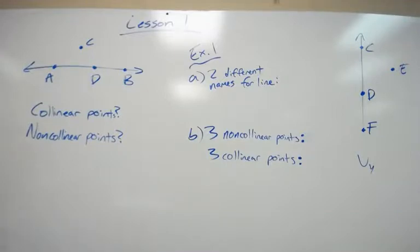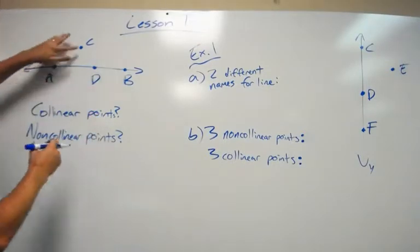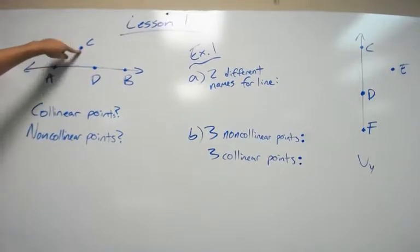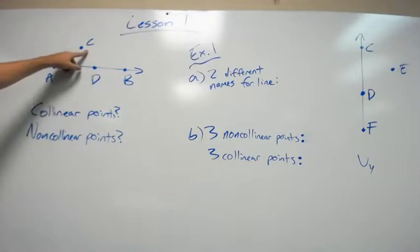First, I want to define what a point is. Let's look at point C. A point names the location but has no size. It is represented by a dot labeled using a capital letter C, for example. So this point is simply labeled C.